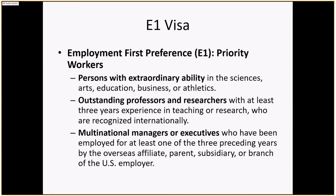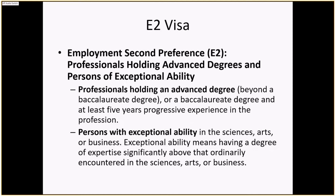E2 visas are second preference visas for professionals holding advanced degrees and persons of exceptional ability — specifically those with a bachelor's degree and at least five years of progressive experience in the profession, or persons with exceptional ability in science, art, and business, meaning a degree of expertise significantly above that ordinarily encountered. E3 employment third preference covers skilled workers (jobs requiring minimum two years training or experience), professionals (requiring at least a bachelor's degree), and unskilled workers capable of filling positions requiring less than two years of training.